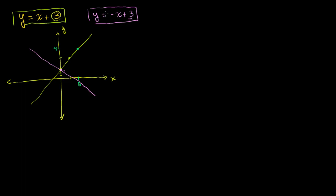Is there a point or a coordinate that satisfies both equations? Think about it — everything that satisfies the first equation is on the green line, and everything that satisfies the purple equation is on the purple line. So what satisfies both? Well, if there's a point that's on both lines — essentially a point of intersection. In this situation, that point is actually the y-intercept: the point 0 comma 3 is on both lines. So that x-y pair must satisfy both equations. When x is 0, 0 plus 3 equals 3 for both equations.